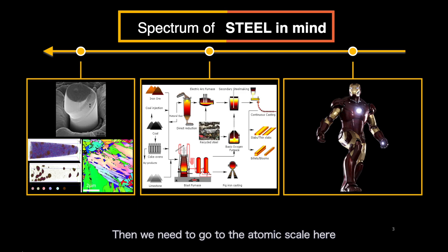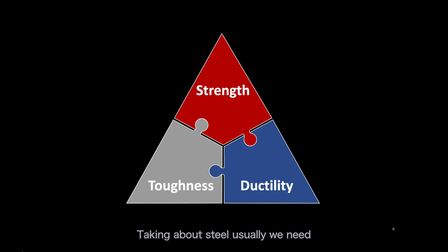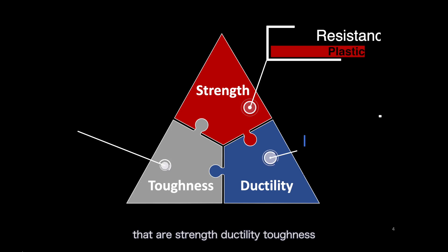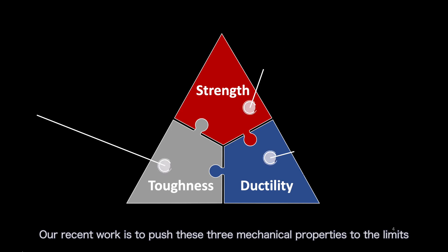Then we need to go to the atomic scale. Talking about steel, usually we need to improve three very important mechanical properties: strength, ductility, and toughness. Our recent work is to push these three mechanical properties to the limit.